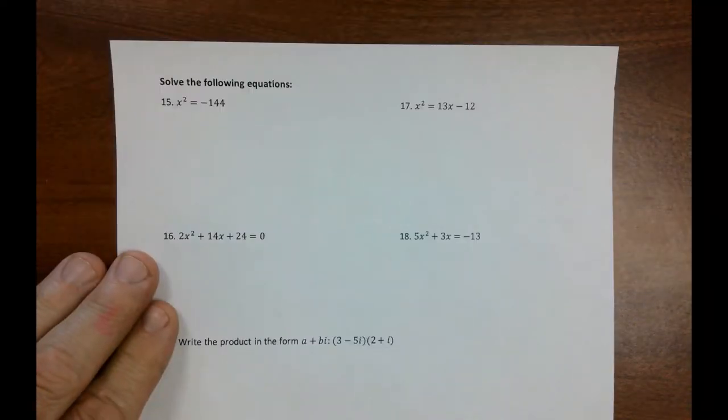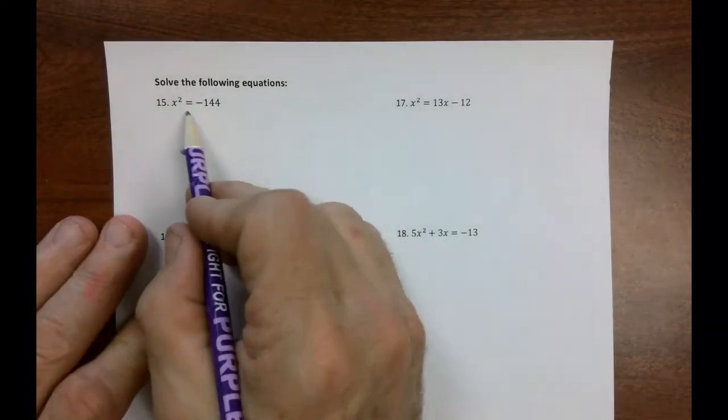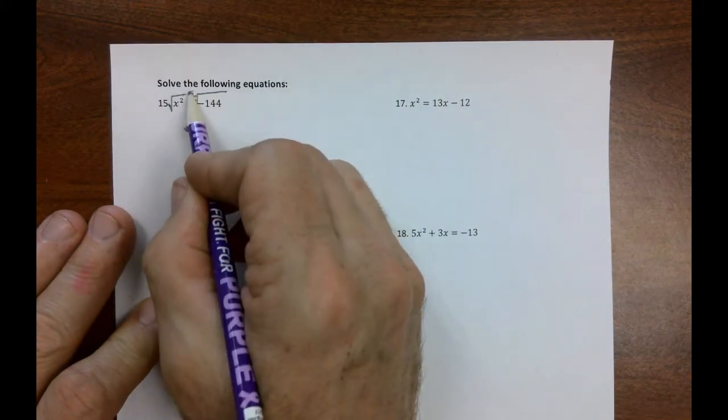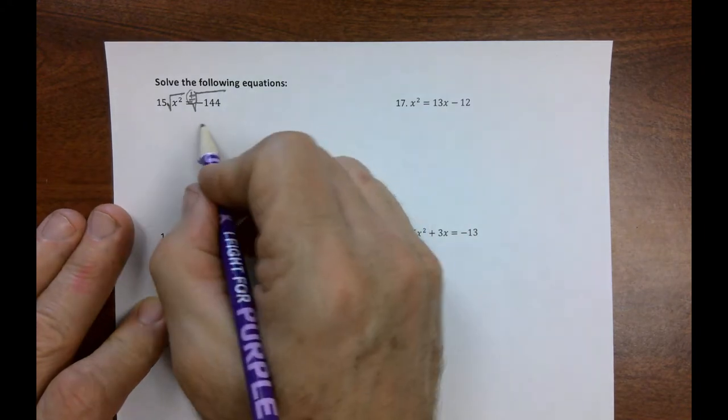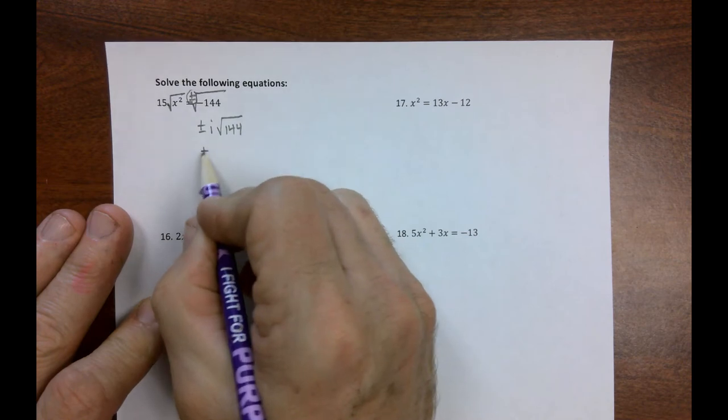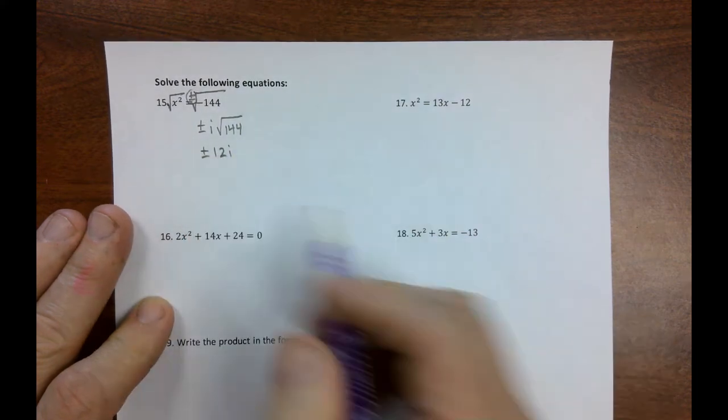These next few are just pure algebra. So, how do we solve this? Bada boom, bada bing, do the right thing. Don't forget that little message. So, I get plus or minus. Take the i out. 144. So, it's plus or minus 12i. Done.